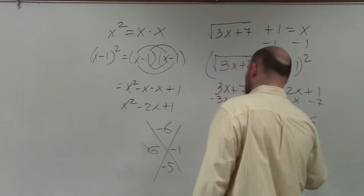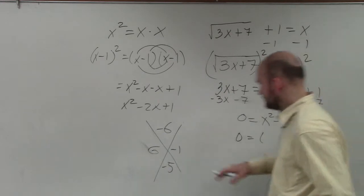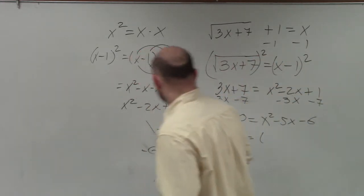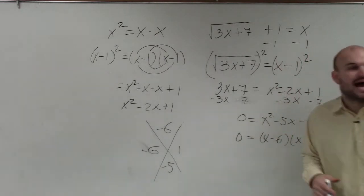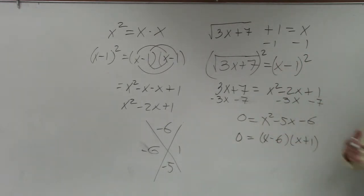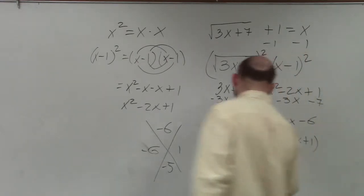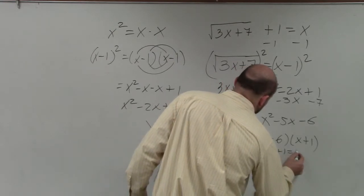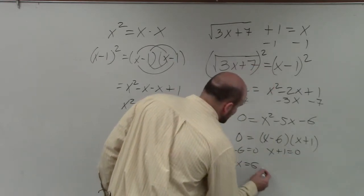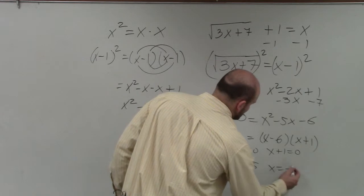So it should be x minus 6 times x plus 1. Now that we have the product equal to 0, I can set them both equal to 0. So therefore, x equals 6 and x equals negative 1.